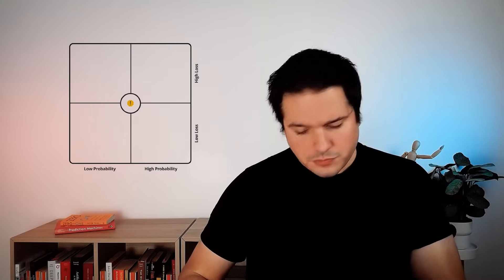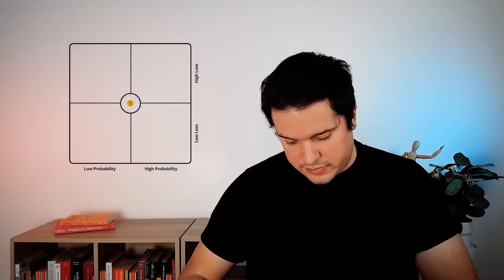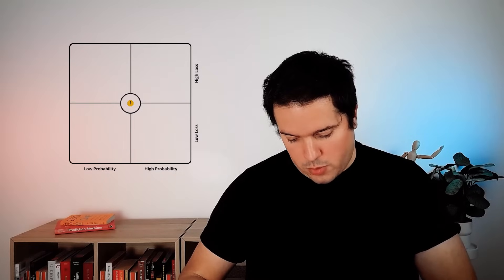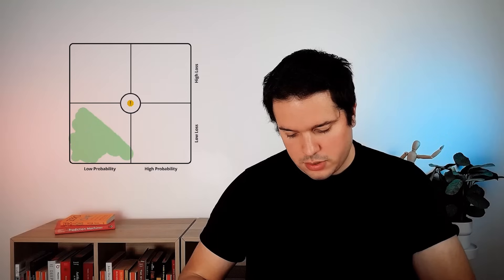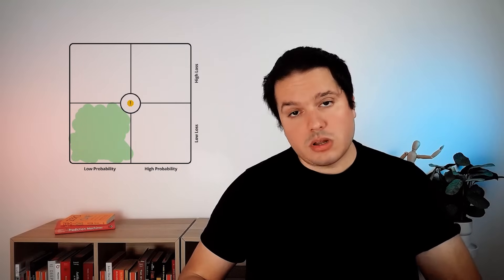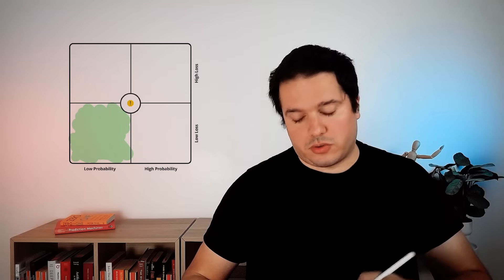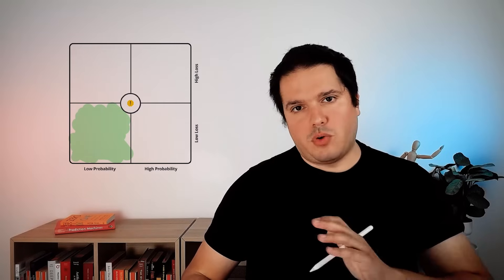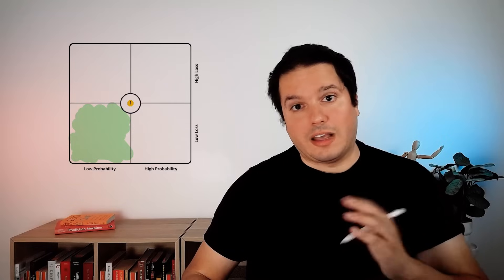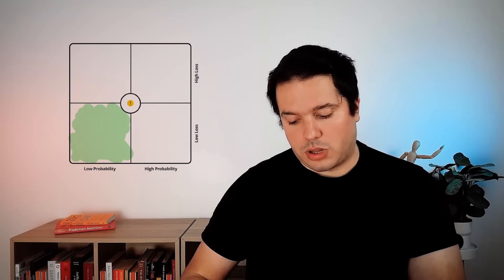So in this scenario, we will start with these cases. For example, low probability, low loss. These are the things that most likely won't happen. And even if they do, it won't affect you that much. So if you have any risk that you are taking that is in this quadrant, just ignore it. Most likely it won't affect you that much.